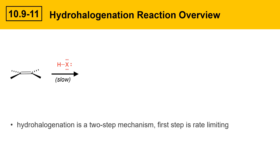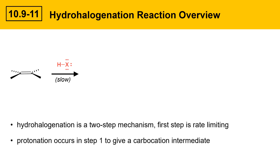The hydrohalogenation reaction is a two-step mechanism, and the first step is rate limiting. Protonation of the double bond occurs in step one to give a carbocation intermediate. The electrons in the carbon-carbon double bond are attracted to the strong acid proton on HX and they'll go out and make a bond to it. This is an acid-base reaction. The result is a carbocation intermediate, where the H that came from the acid and the carbocation carbon are shown.